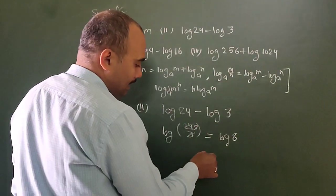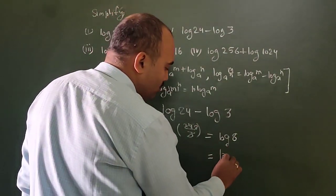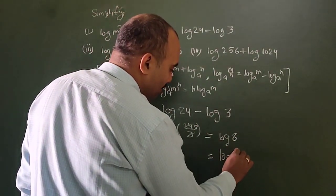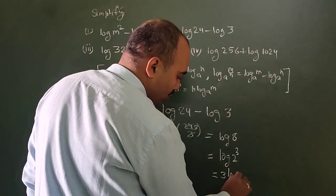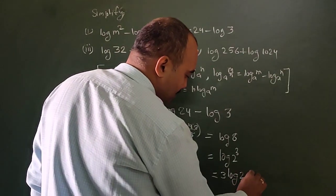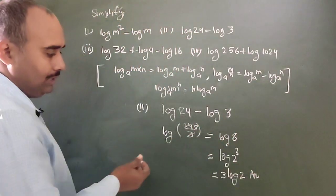Now, let's simplify log 8. 8 is 2 cubed, so this becomes log 2 to the power 3, which equals 3 log 2. Here we go, simplification is complete.